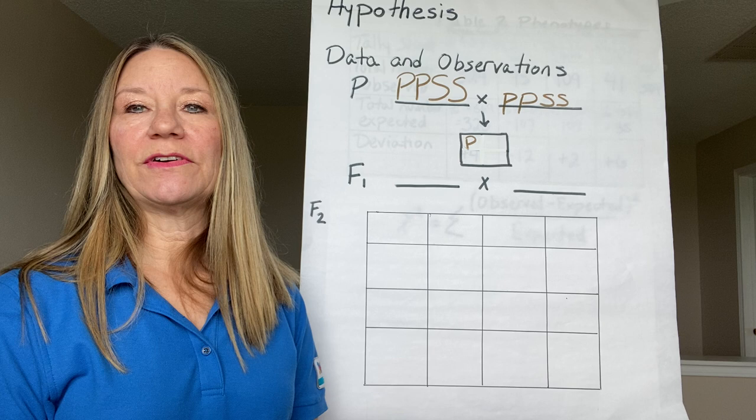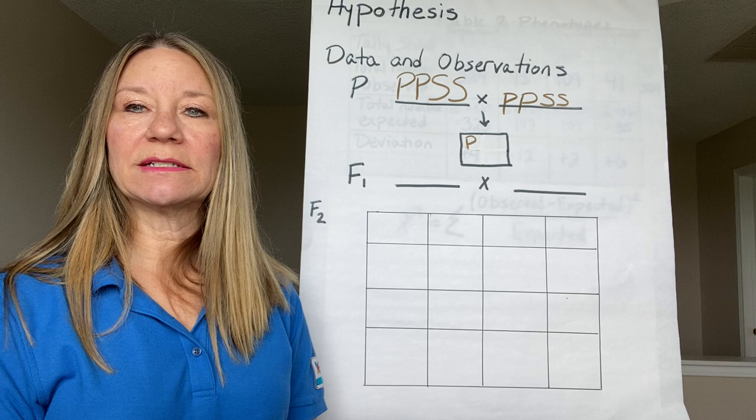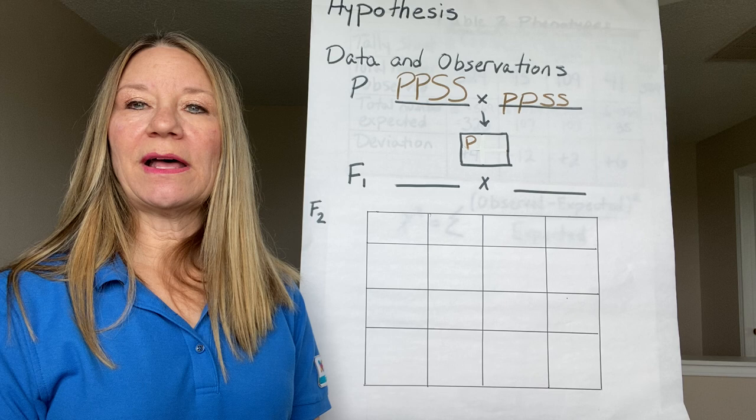I'm sure in previous studies you've heard of Gregor Mendel. Gregor Mendel was an Austrian monk who studied genetics of pea plants in his garden. He was fortunate to pick pea plants because pea plants had several different opposing traits such as purple flowers and white flowers, tall plants and short plants, green pods, and yellow pods.